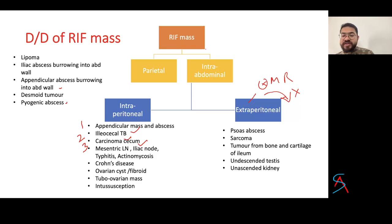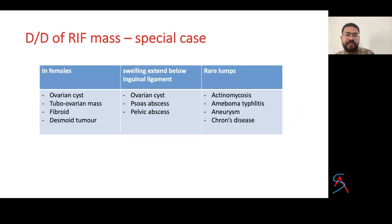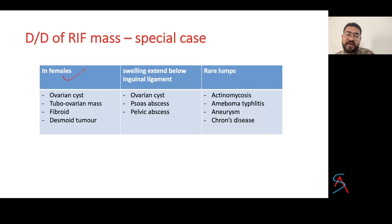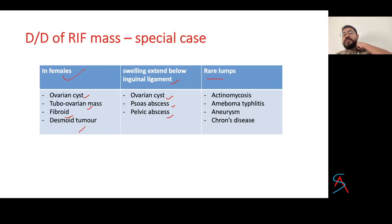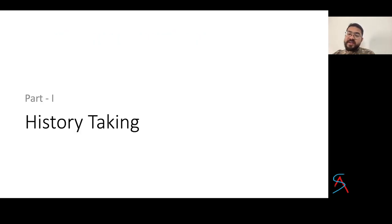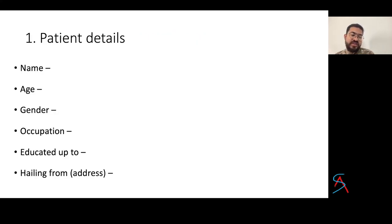Never do the knee-elbow position to look for an extraperitoneal mass. In females, special causes of right iliac fossa mass include ovarian, tubo-ovarian, fibroid, or desmoid tumor. Swelling extending below the inguinal ligament could be ovarian, psoas abscess, or pelvic abscess. Other lumps in the right iliac fossa include actinomycosis, amoeba, typhilitis, aneurysm, or Crohn's disease.